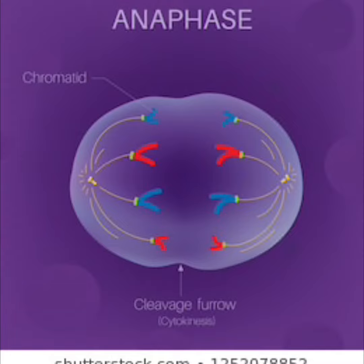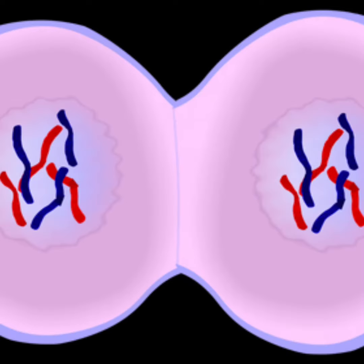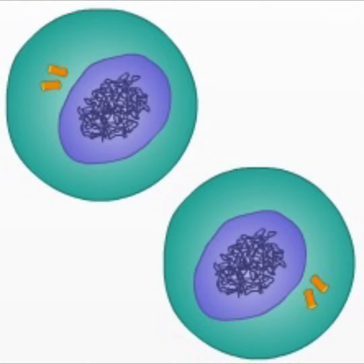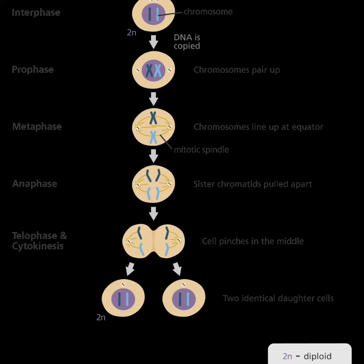Anaphase is when the chromosomes start to split. Telophase is the final phase — it is when two identical cells are created. This also involves cell division, which occurs in mitosis.